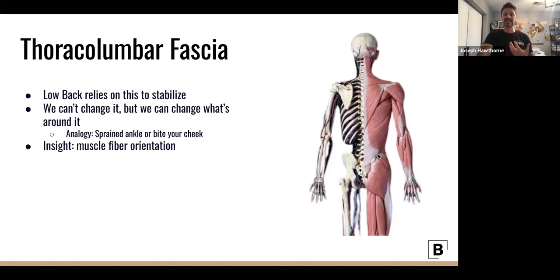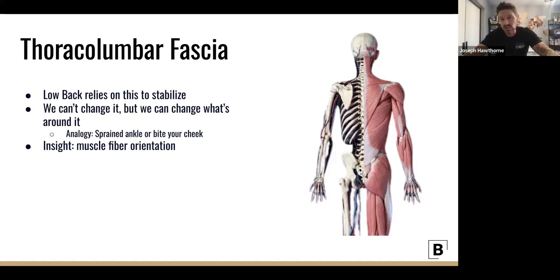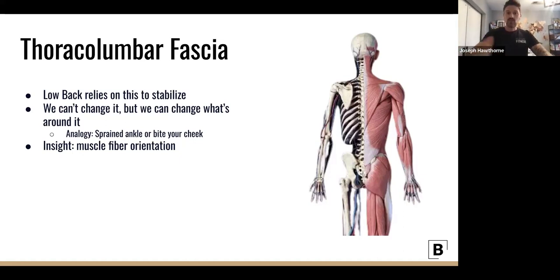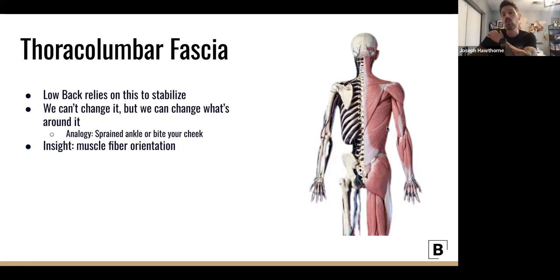The thoracolumbar fascia tries to hold the spine stable as we flex forward. During an RDL, hinge, or deadlift — any pattern where you're hinging at the hips — people say 'flat back,' but testing shows that even what looks perfect to the eye can have eight to twenty degrees of actual change in spinal position. Imagine someone who's actually struggling. This is why we need to know which muscle fibers to train and how much.